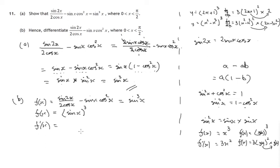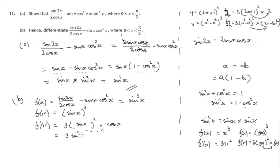But we can certainly differentiate sine x cubed by using the power rule and then adjusting by whatever we get when we differentiate sine x — and that's cos x. So that's this adjusted power rule; it's really the chain rule that we're using. Finally, we've got 3 — and sine x times sine x is sine squared x — times cos x. So there it is: 3 sine squared x times cos x. That's what we get when we differentiate that expression.